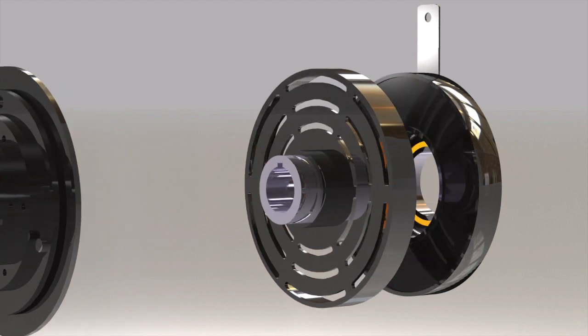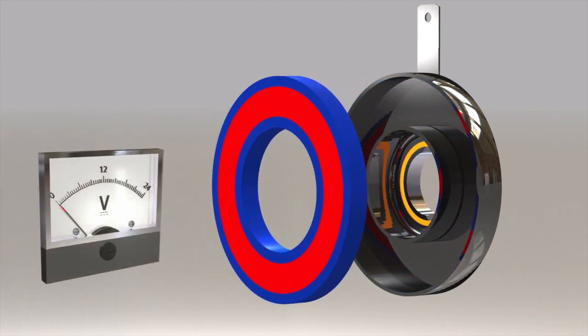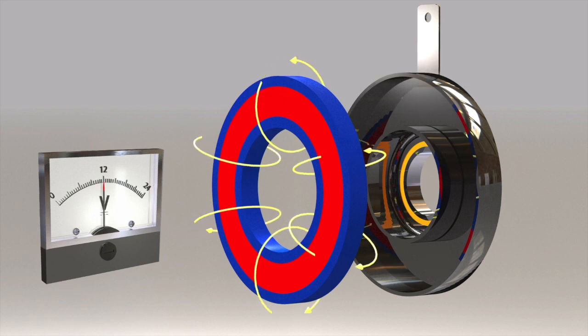Clutches operate electrically but transmit torque mechanically. When current is applied to the clutch coil, it becomes an electromagnet and produces magnetic lines of flux.